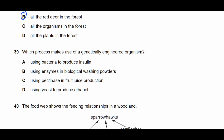Question thirty-nine: which process makes use of a genetically engineered organism? The answer is using bacteria to produce insulin. Insulin is a human hormone; bacteria don't naturally produce it. Using bacteria to produce something they don't naturally make is a form of genetic engineering.